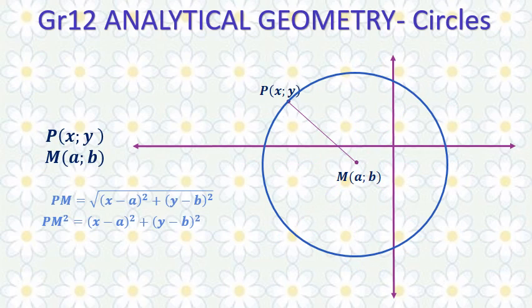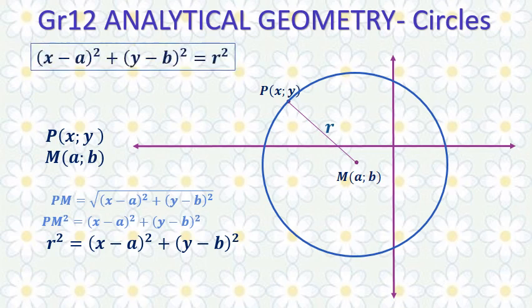The distance formula actually is the source of the formula for the equation of a circle, where PM is in fact the circle's radius, with M being the center of the circle. So instead of writing PM squared, I can now replace it with r for radius squared. And here we have the equation of a circle: r² = (x - a)² + (y - b)², where (a, b) represent the center of the circle and r represents the radius of the circle.